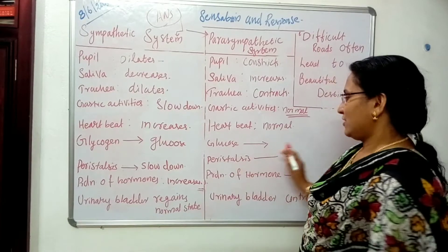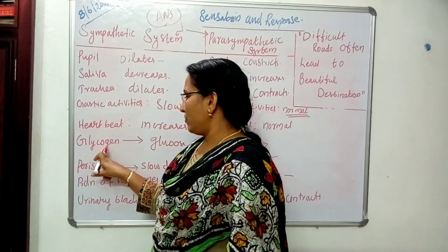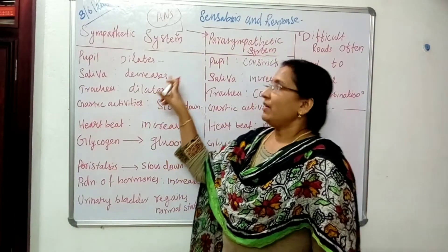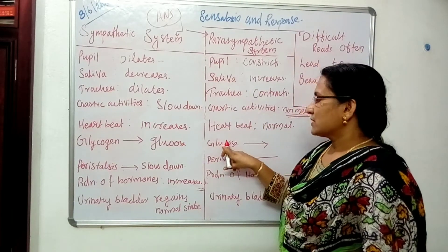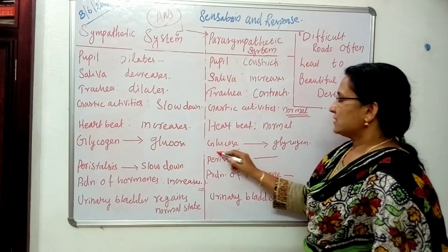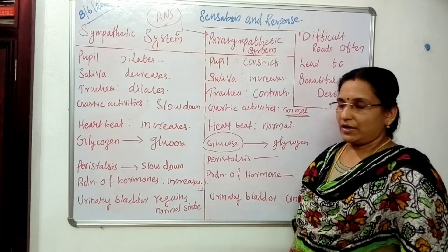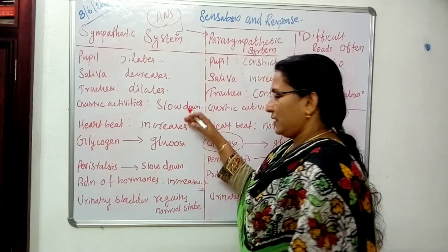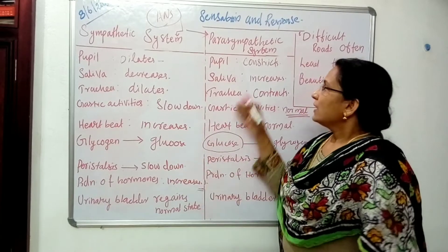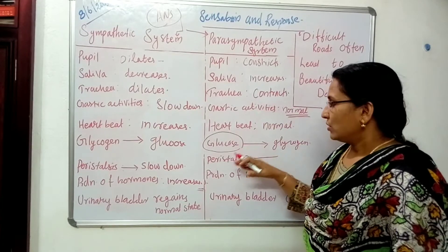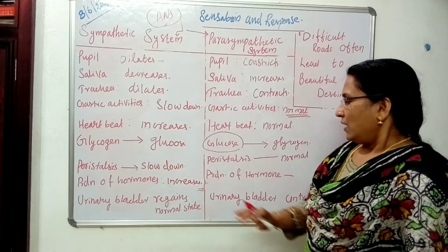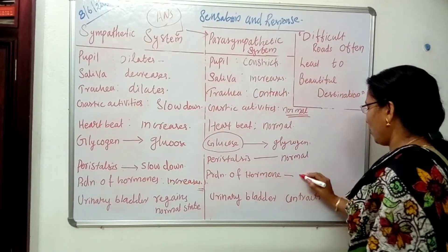Glycogen, the stored form of glucose, is converted to glucose during the sympathetic system. In the parasympathetic system, glucose is converted back into glycogen and stored in the liver, maintaining a normal blood glucose level. Peristalsis, which slowed down during the sympathetic system, returns to normal — the wave-like motion resumes. All metabolic activities, which became abnormal during the sympathetic system, come back to normal. Production of hormones, which increased during the sympathetic system, decreases.